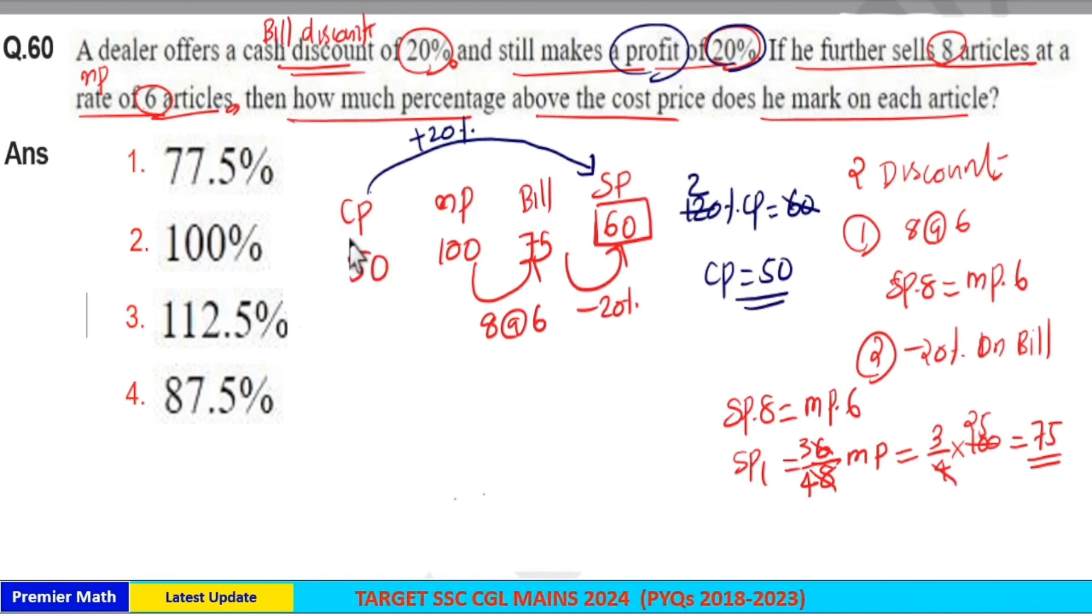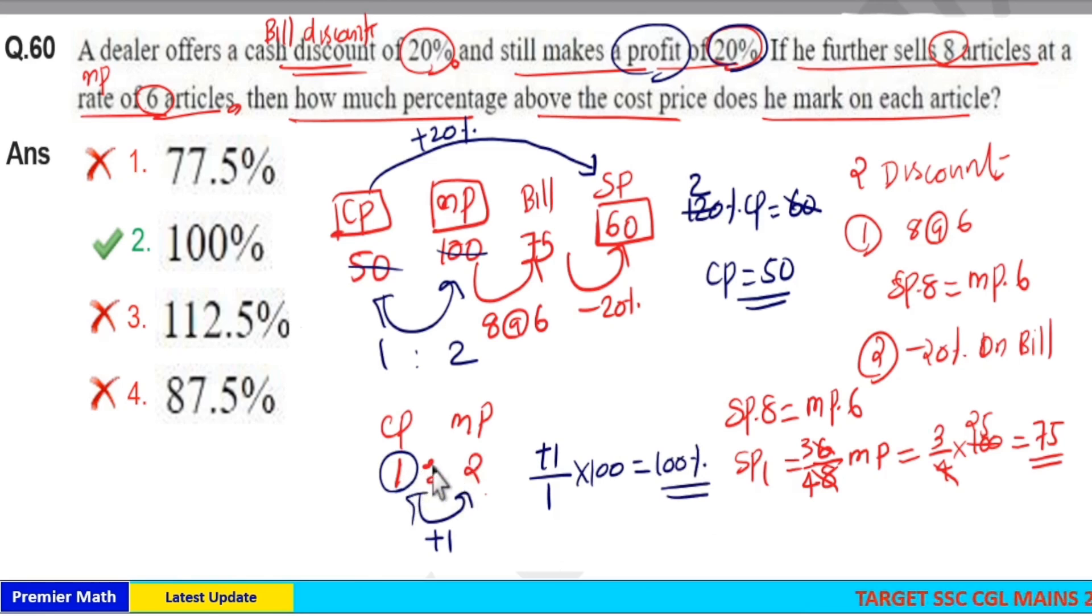Now you got cost price, marked price, and selling price. Here we need cost price and marked price ratio, which is 50 to 100. So 1 is to 2 is the ratio, which means 100% increment on this cost price. Marked price is 100% more than cost price. So option 2 is your answer.